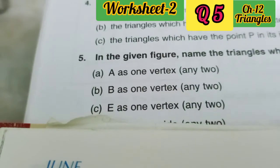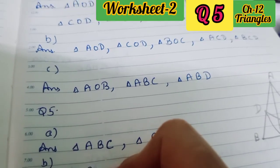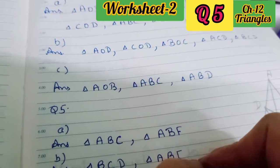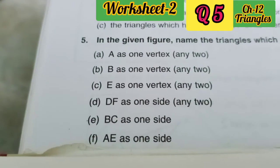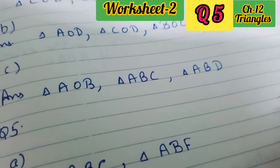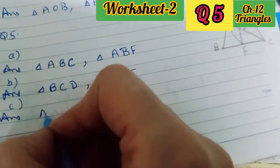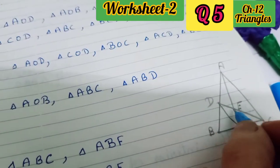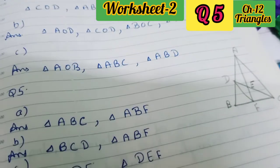In part B, B as one vertex — you have to take B as one vertex and name any 2 triangles. So you can take triangle BCD, triangle ABF, or triangle ABC — here B is also one of the vertices. In part C, E as one vertex — any 2. Now E as one vertex, so we write triangle ADE and triangle AEC, or also triangle DEF — write only 2.